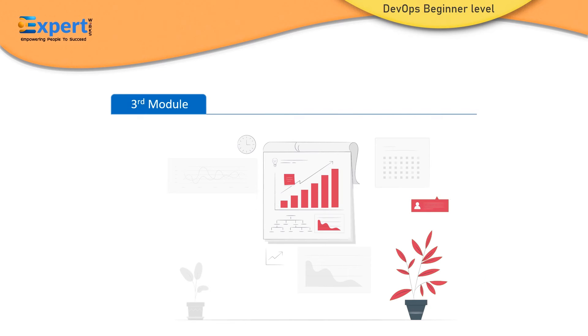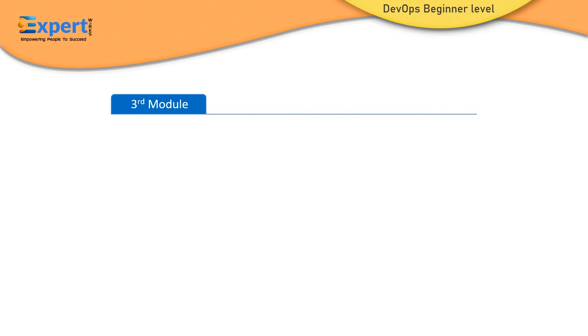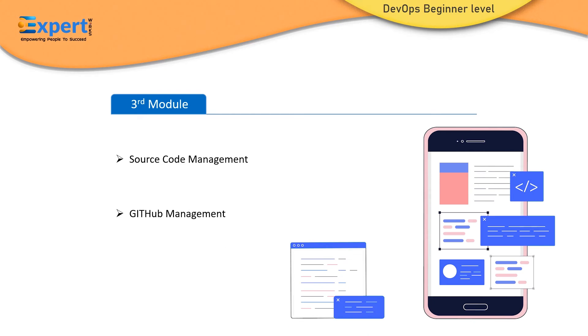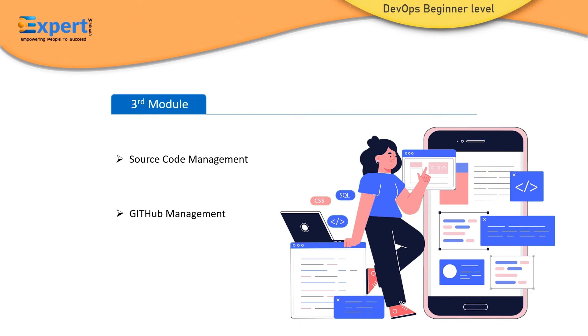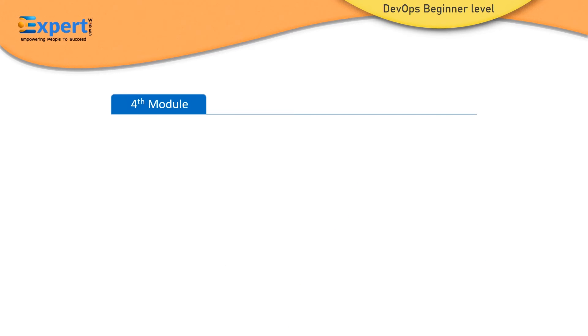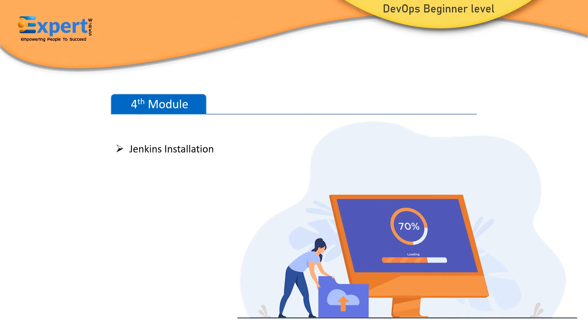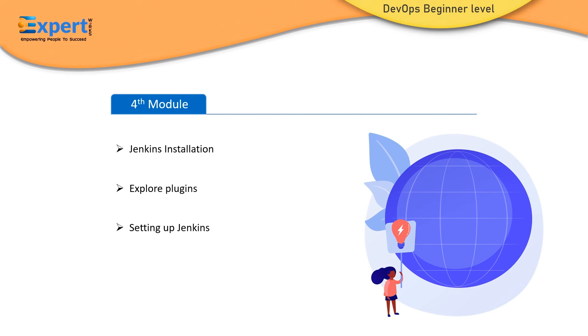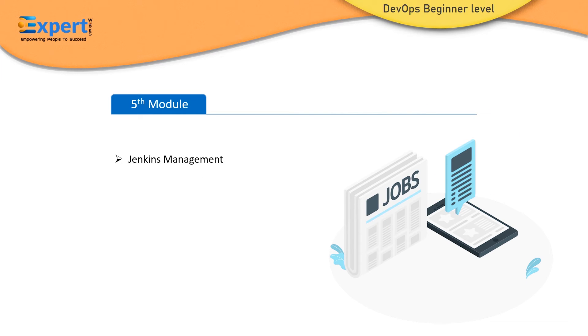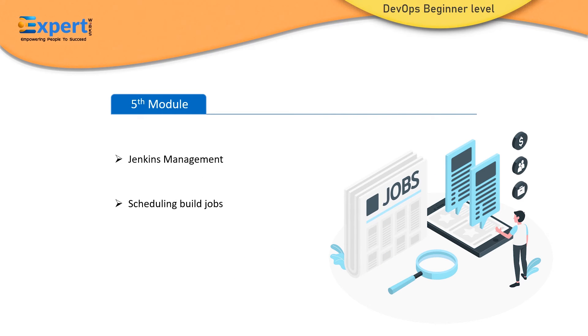In the third module, you will be taught concepts like source code management and GitHub management. The fourth module will teach you Jenkins installation, explore plugins, and how to set up Jenkins to utilize it at its best. The fifth module is all about Jenkins management and scheduling build jobs.